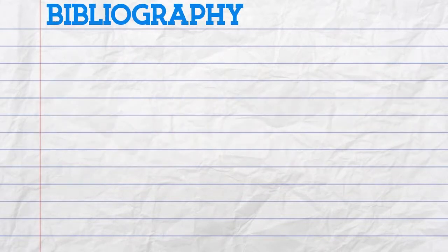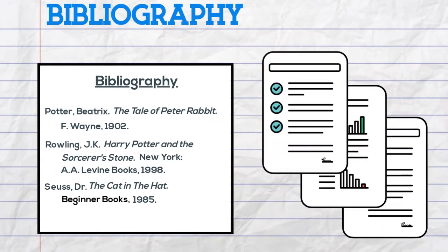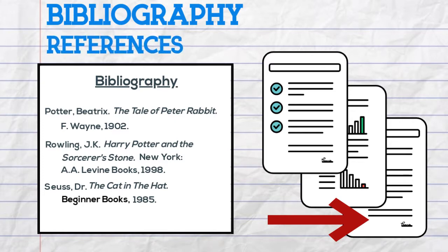A bibliography is where you list the citations from all your sources and is usually located at the end of your research paper. This is sometimes called a list of references.